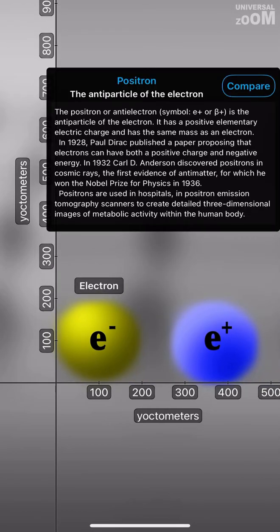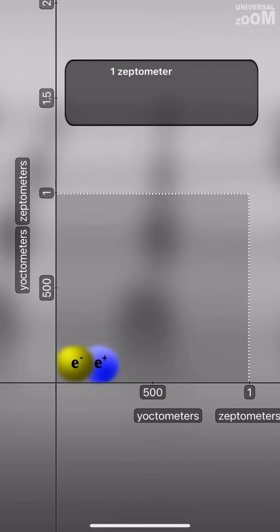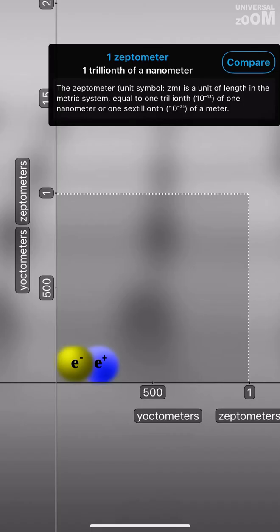Electron, Positron. 1 Zeptometer, 1 trillionth of a nanometer.